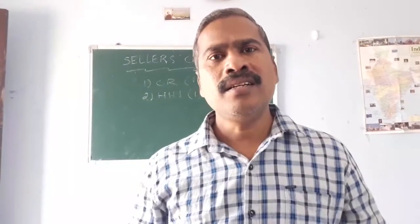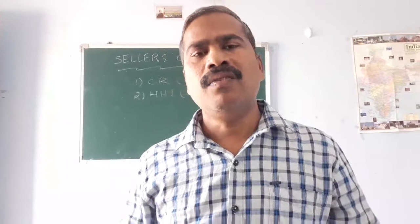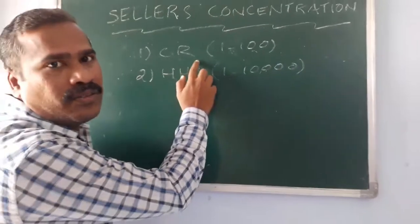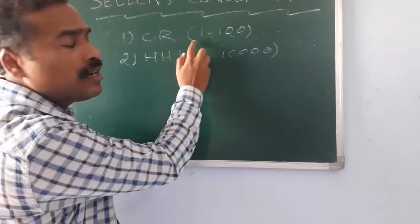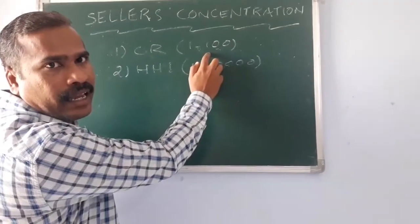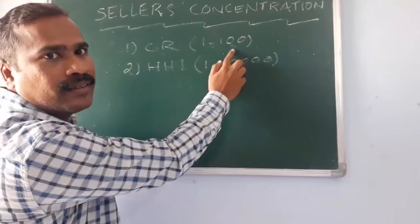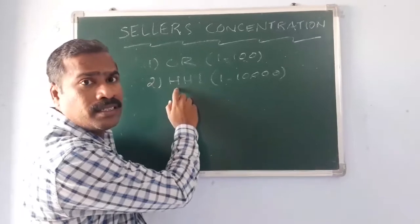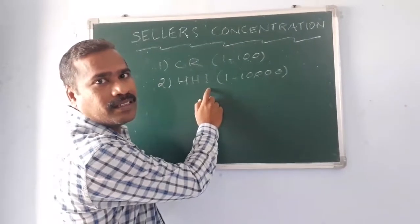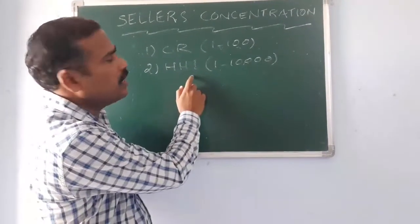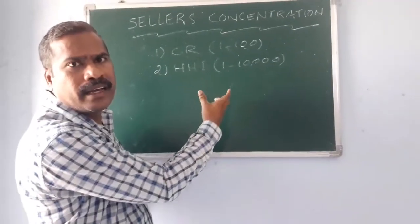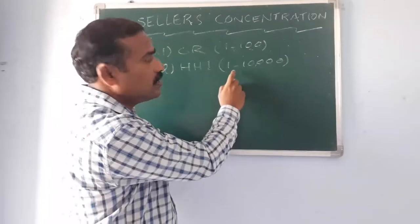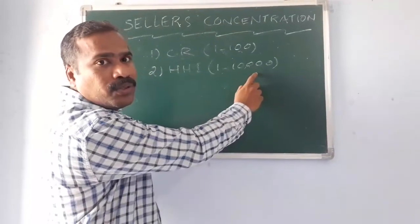Sellers concentration is measured in two ways: one is the Concentration Ratio (CR), and the other is the Herfindahl-Hirschman Index (HHI). The CR is calculated on a scale from 1 to 100, while the HHI is measured on a scale from 1 to 10,000.